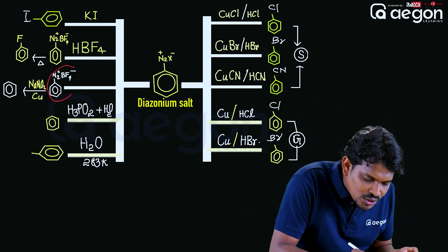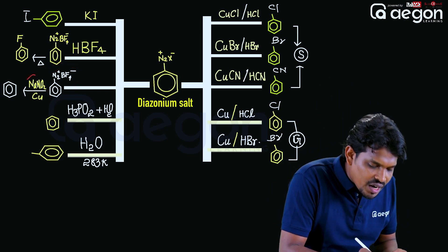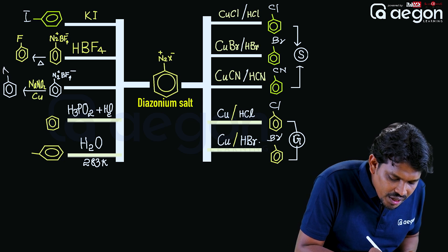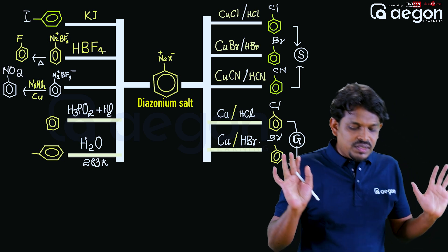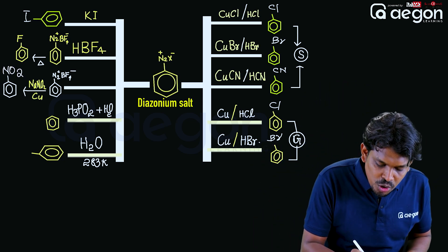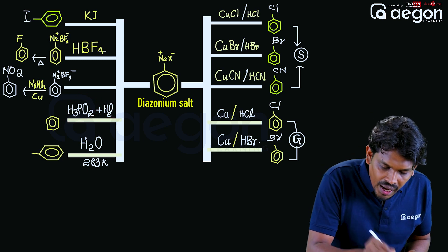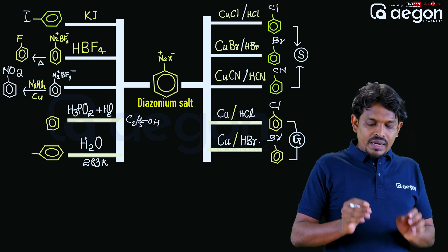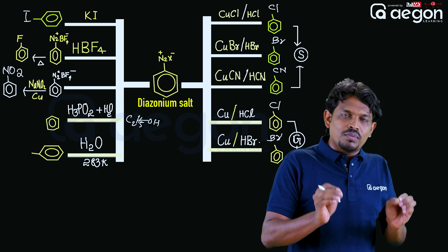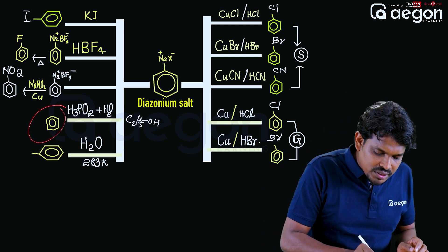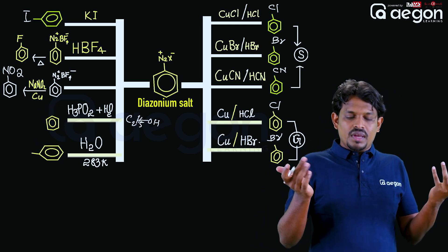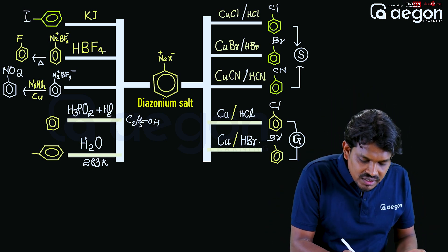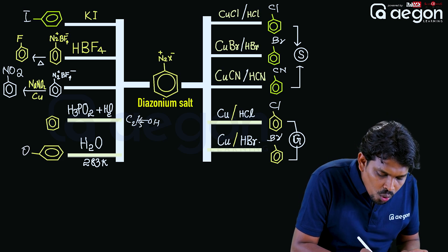Benzene diazonium salt treated with NaNO2 and Cu gives nitrobenzene. With H3PO2 or H2O or C2H5OH, diazonium salt undergoes reduction to give benzene. On heating with H2O at 283 Kelvin, the product is phenol.